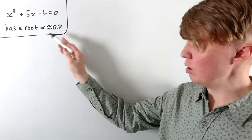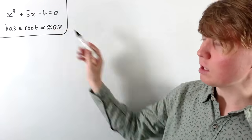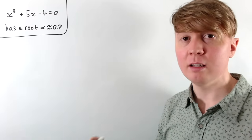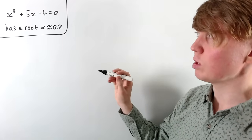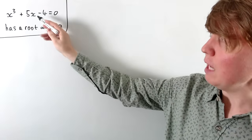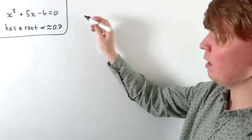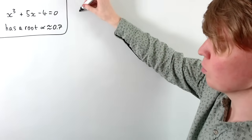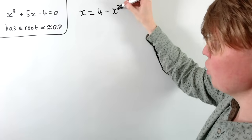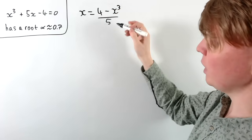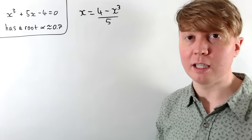Taking as known that we've got a root roughly equal to 0.7, we now need to set up an iterative procedure — and there are lots of different ways of doing this. You essentially just rearrange this equation into a slightly different form. Here we make x the subject: we add 4x and take away x cubed, then divide by 5, giving us x equals 4 minus x cubed, all divided by 5. These two equations are just the same equation written in a slightly different form.